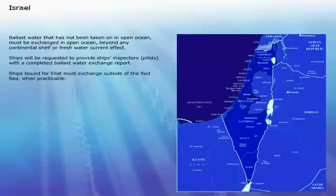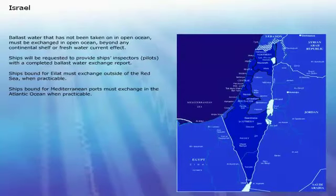Ships bound for Israel must exchange outside of the Red Sea, when practicable. Ships bound for Mediterranean ports must exchange in the Atlantic Ocean, when practicable.